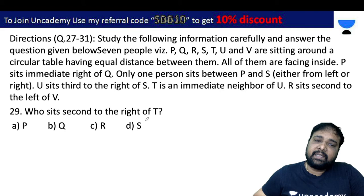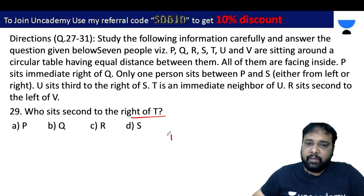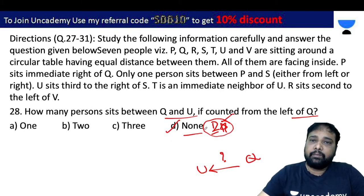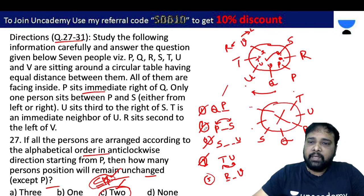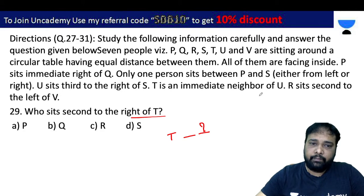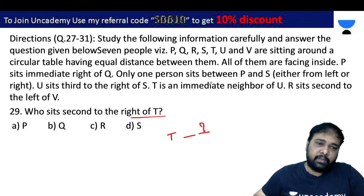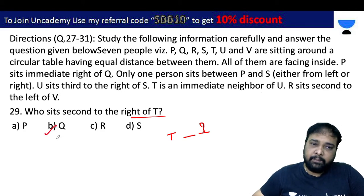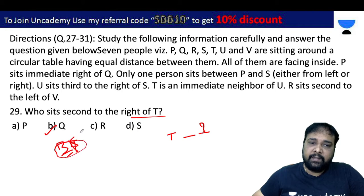Who sits second to the right of T? T and the person in the second position on T's right side — going through the arrangement: the answer is Q. Q is to the left of U, confirming the second option only is the right answer.